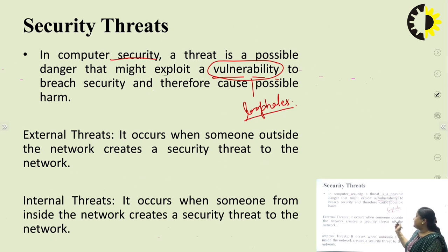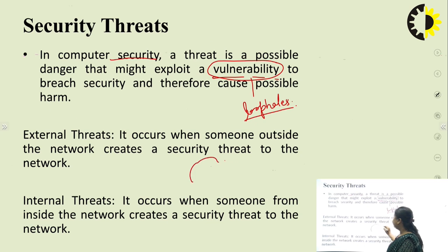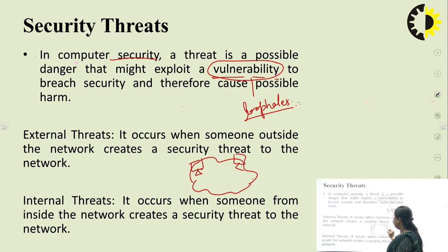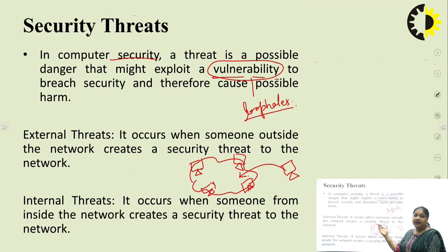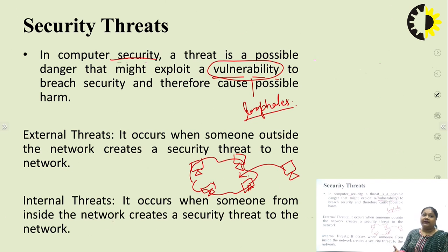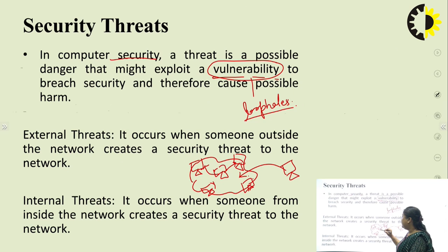External threats occur when someone outside the network creates a security threat to the network. Suppose there is a network with some systems attached, and somebody from outside attacks that network — that is called an external threat. Internal threats occur when someone from inside the network creates a security threat, trying to harm the other systems within the same network.